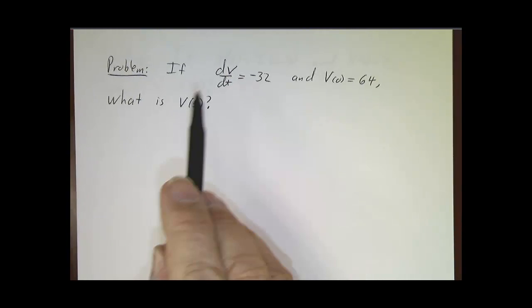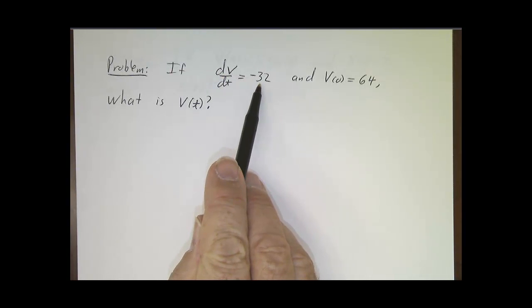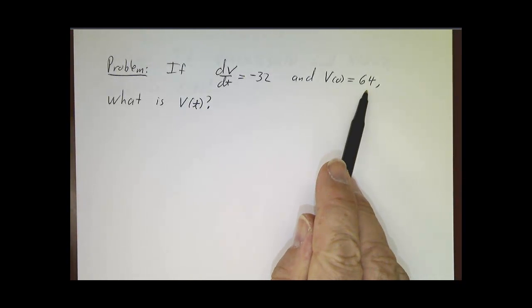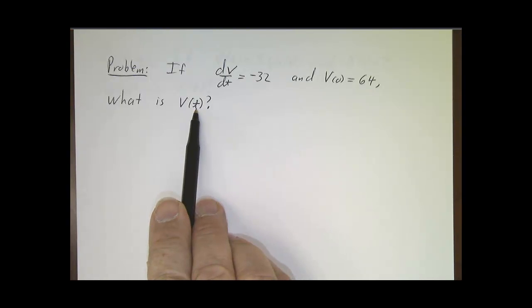If you throw something up in the air, let's say the velocity is v, gravity pulls it down at a rate of 32 feet per second squared. So let's suppose you throw it up with an initial velocity of 64 feet per second, and its acceleration is minus 32. What is v?